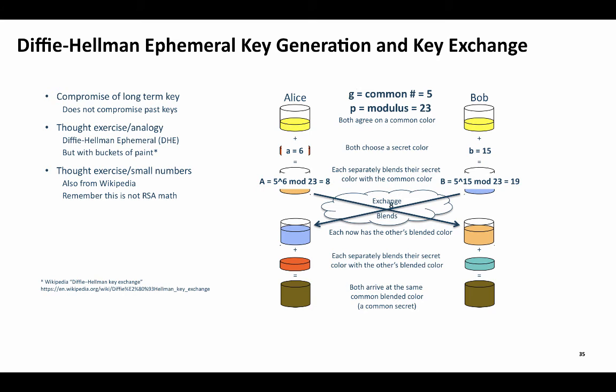Then, Alice sends her blended number to Bob, and Bob sends his to Alice. Finally, each raises the blended number to the value of the secret key, ending up with a common number 2. This shows how to jointly arrive at a common number without one party encrypting a number with the other party's public key like we saw in a previous video using RSA PKCS 1.5 algorithm.